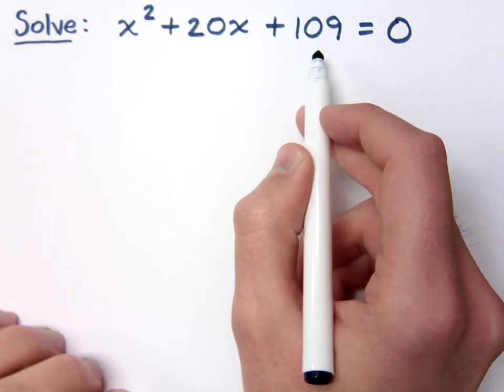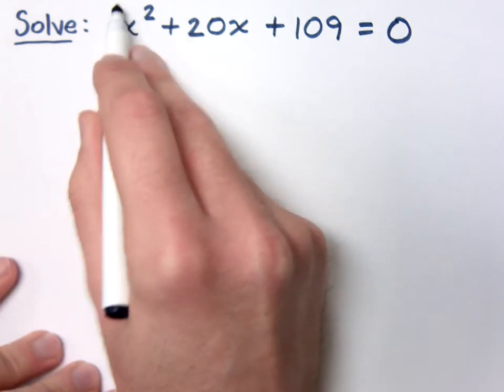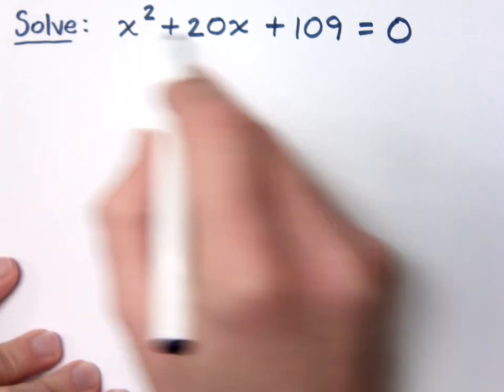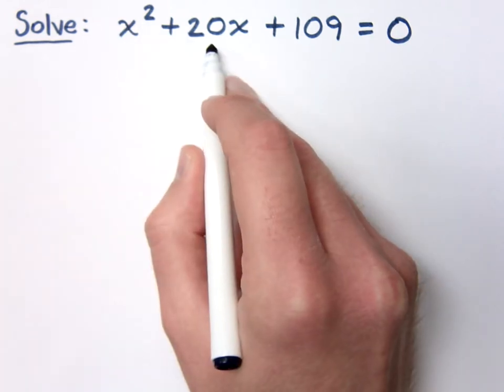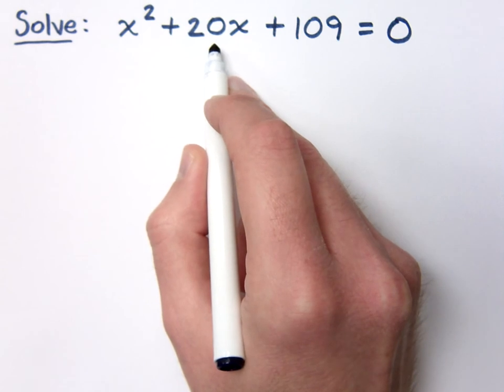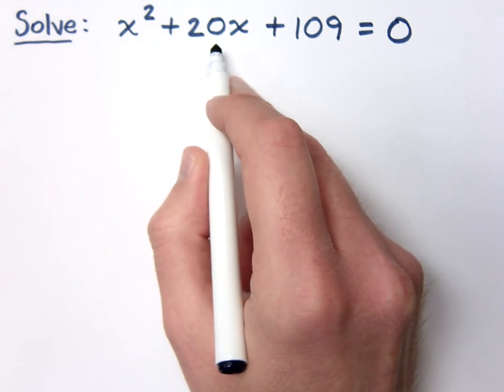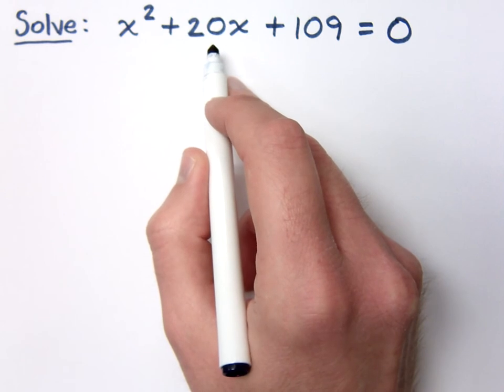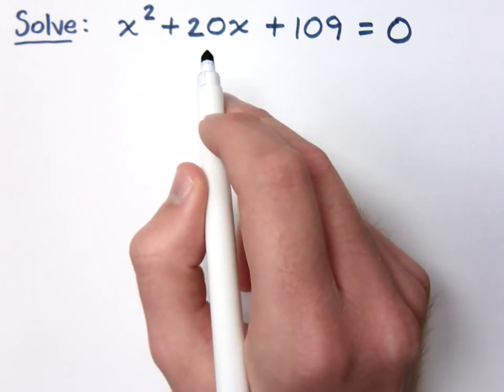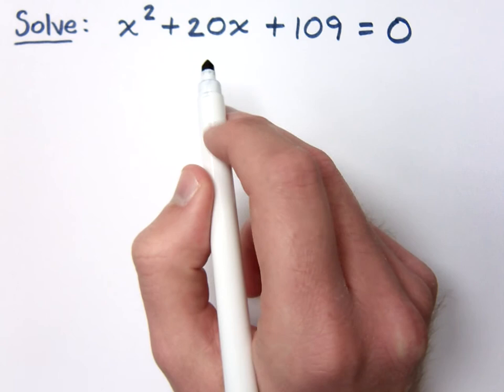But we know this guy is going to be a great candidate for completing the square because not only do we have a lead coefficient of 1, what about this middle coefficient? It's even which means it's going to be easy for us to divide by 2 and square it.